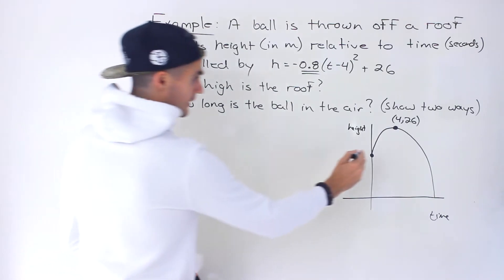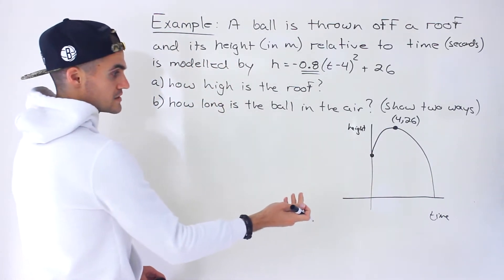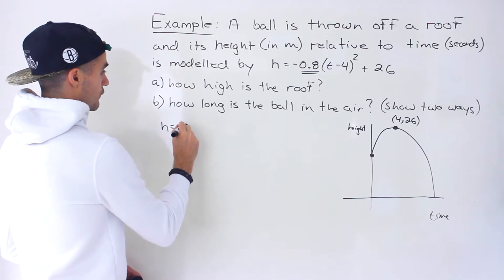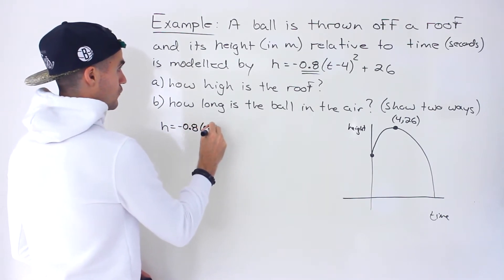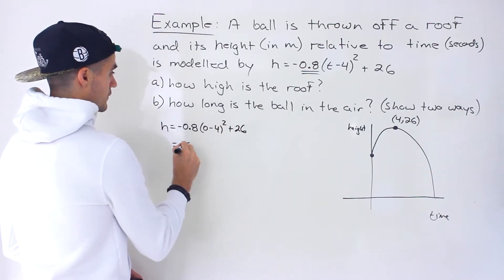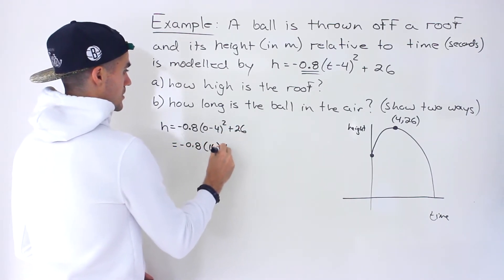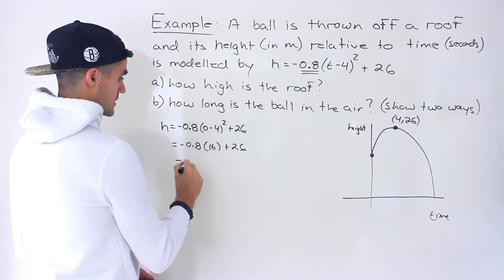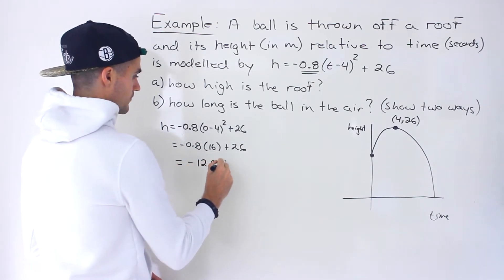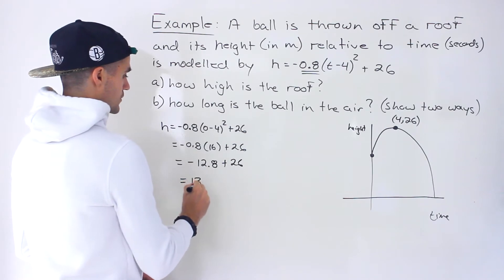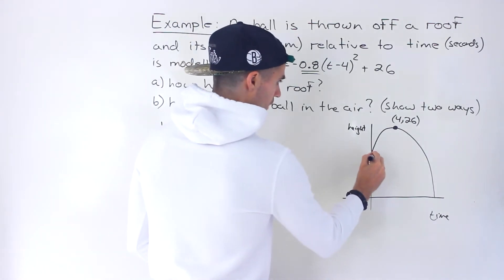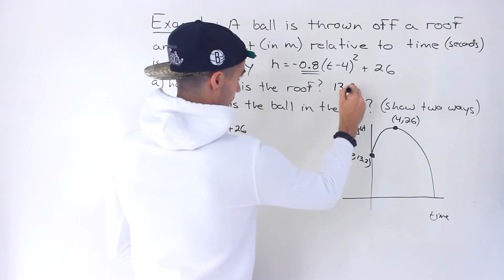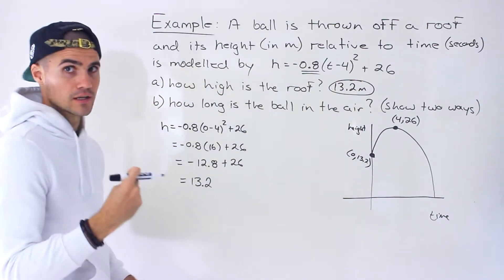To find out how high this roof is, we just plug in 0 for t because that's the initial height that the ball is thrown off. There's no seconds that have gone by yet. So we would plug in 0 for t and then we'd have negative 0.8 times 16 plus 26, which would give us negative 0.8 times 16 equals negative 12.8 plus 26, which gives us 13.2. So that is the initial height. This coordinate here is 0 and 13.2. 13.2 meters is how high the roof is.